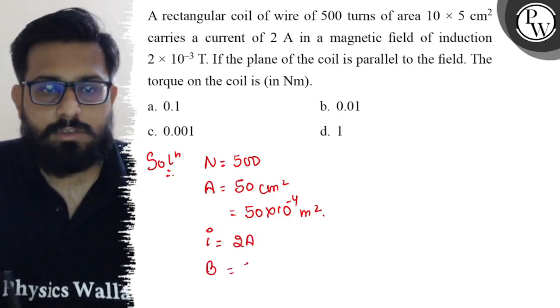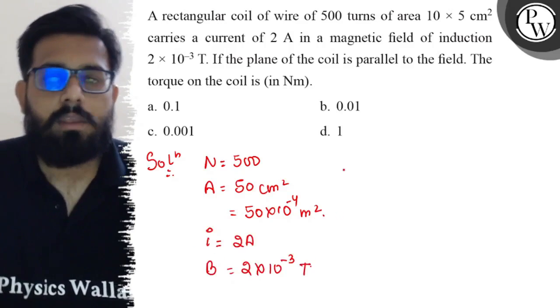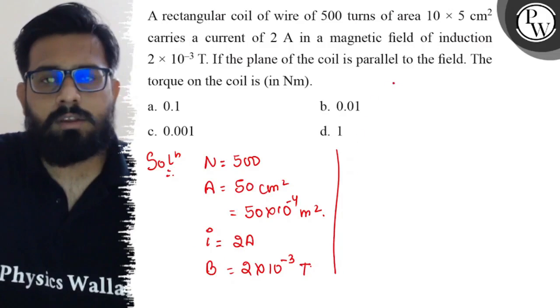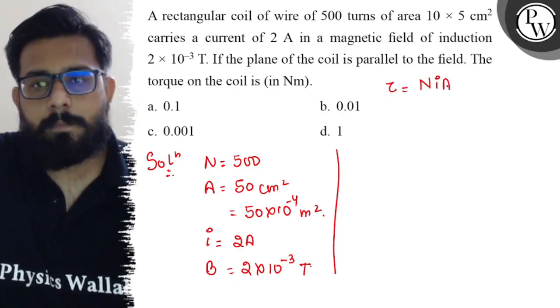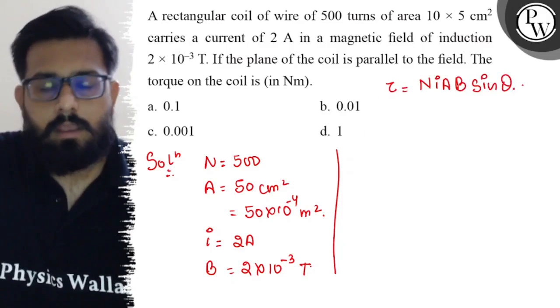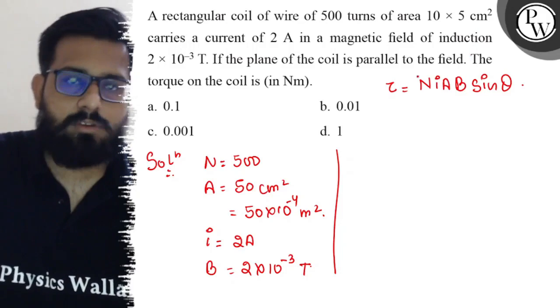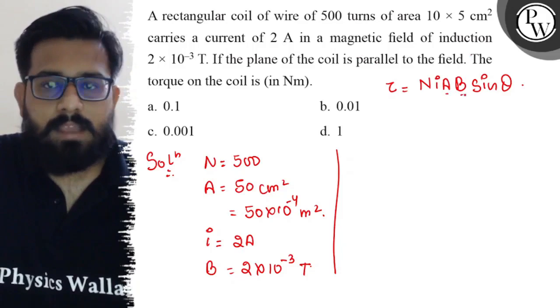Also we have the value of the magnetic field as 2 × 10⁻³ Tesla. When we have to find out the value of the torque, torque can be written as nothing but N·I·A·B·sin(θ).